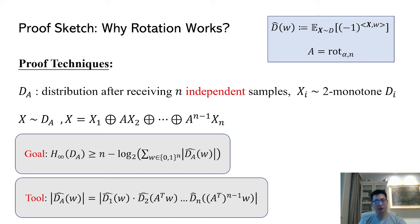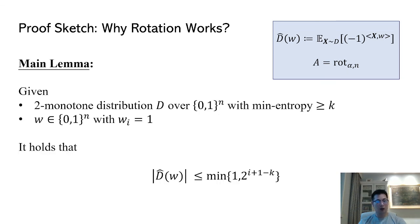Since entropy sources are independent, each Fourier coefficient of the compound distribution dA can be decomposed into a product of multiple Fourier coefficients of two-monotone distributions. The Fourier coefficient of two-monotone distributions has a very nice feature which is formalized by our main lemma.